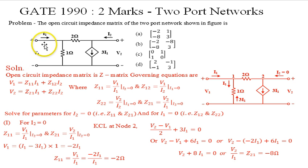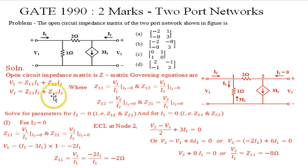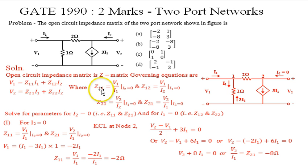V1 and V2 are the voltages at port 1 and port 2; I1 and I2 are the currents at ports 1 and 2. The governing equations are: V1 = Z11·I1 + Z12·I2, and V2 = Z21·I1 + Z22·I2. The defining equations for each parameter are: Z11 = V1/I1 when I2 = 0, Z12 = V1/I2 when I1 = 0, and similarly for Z22 and Z21.